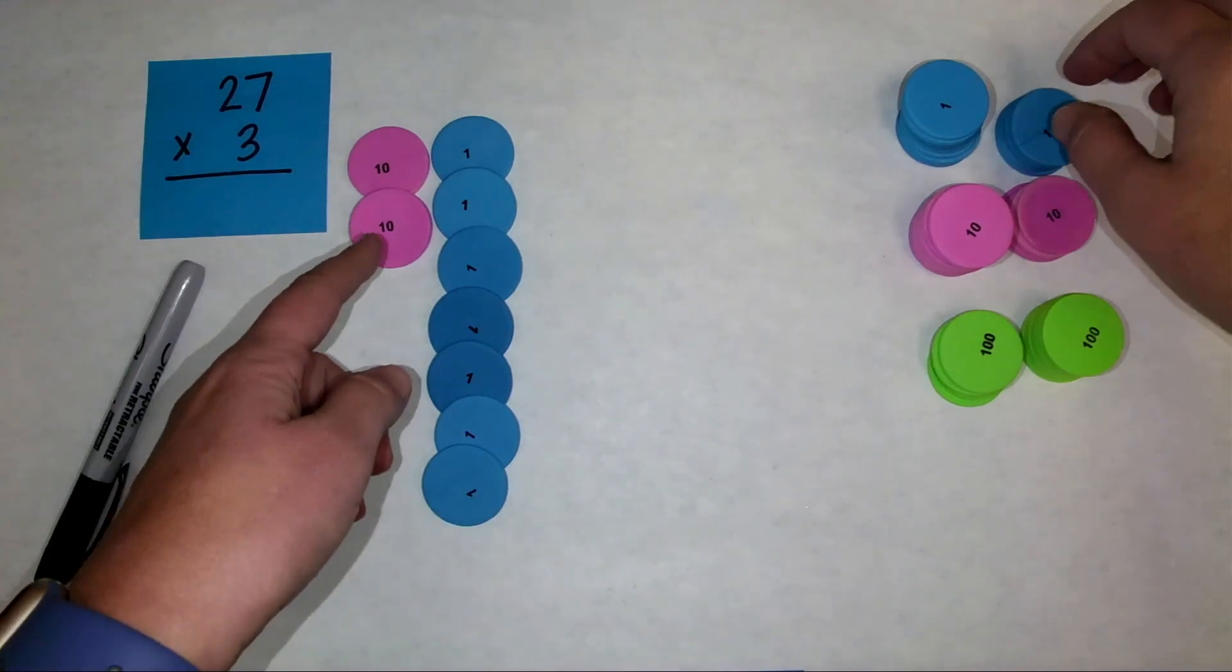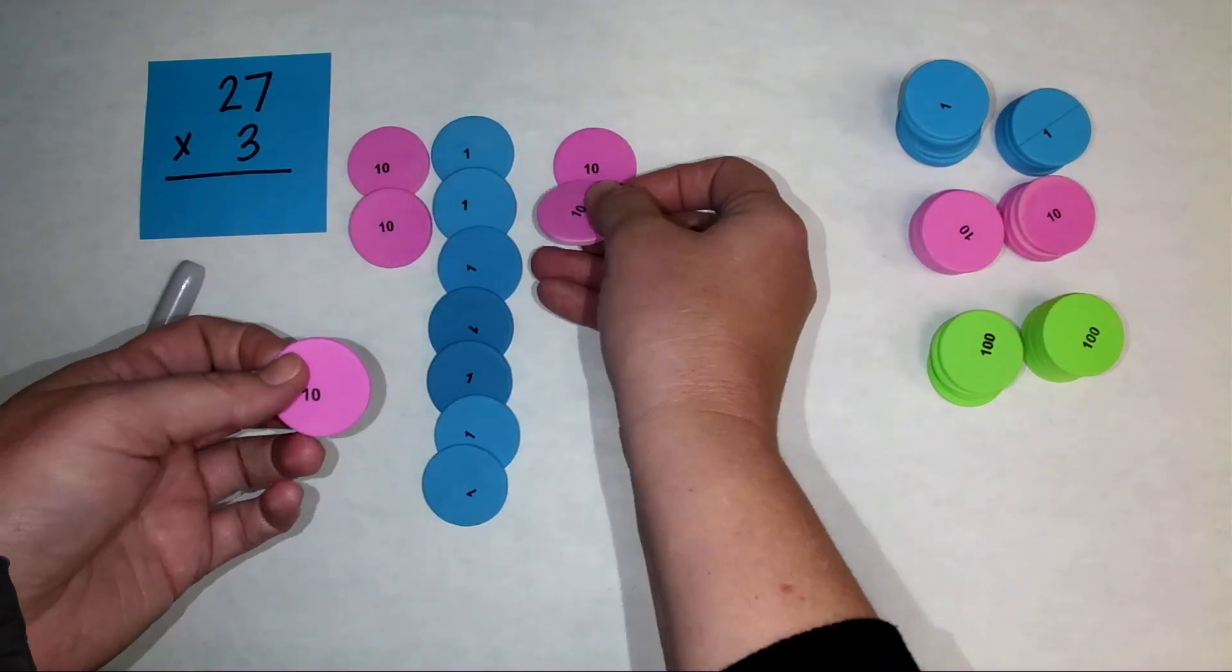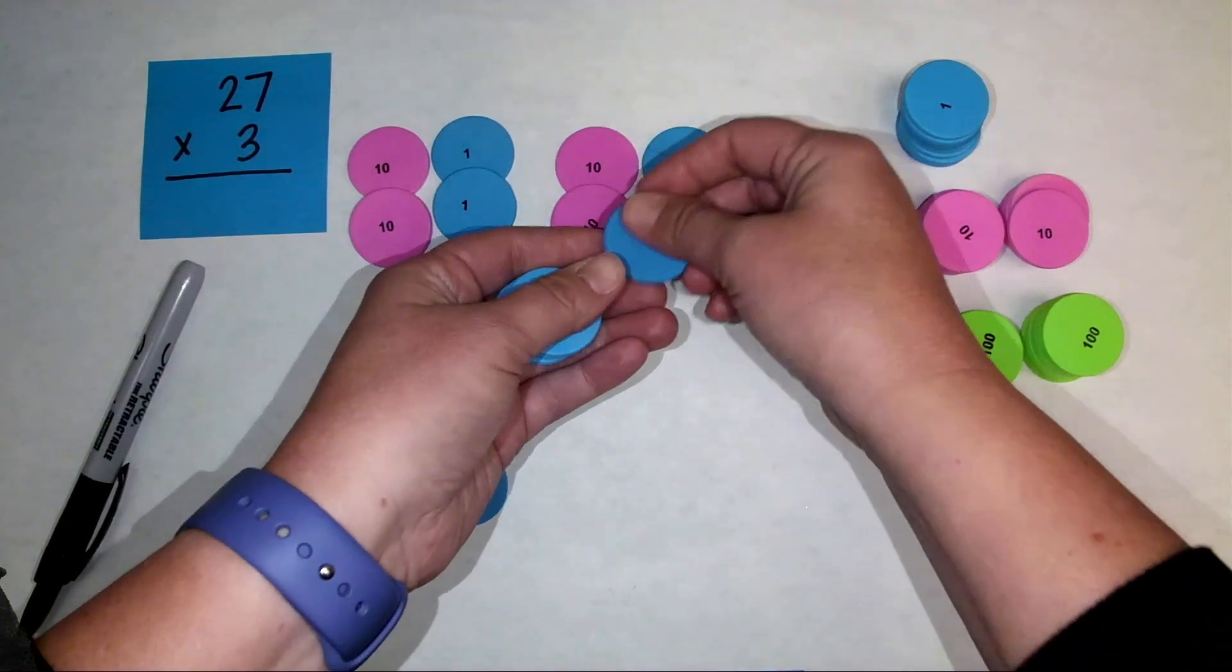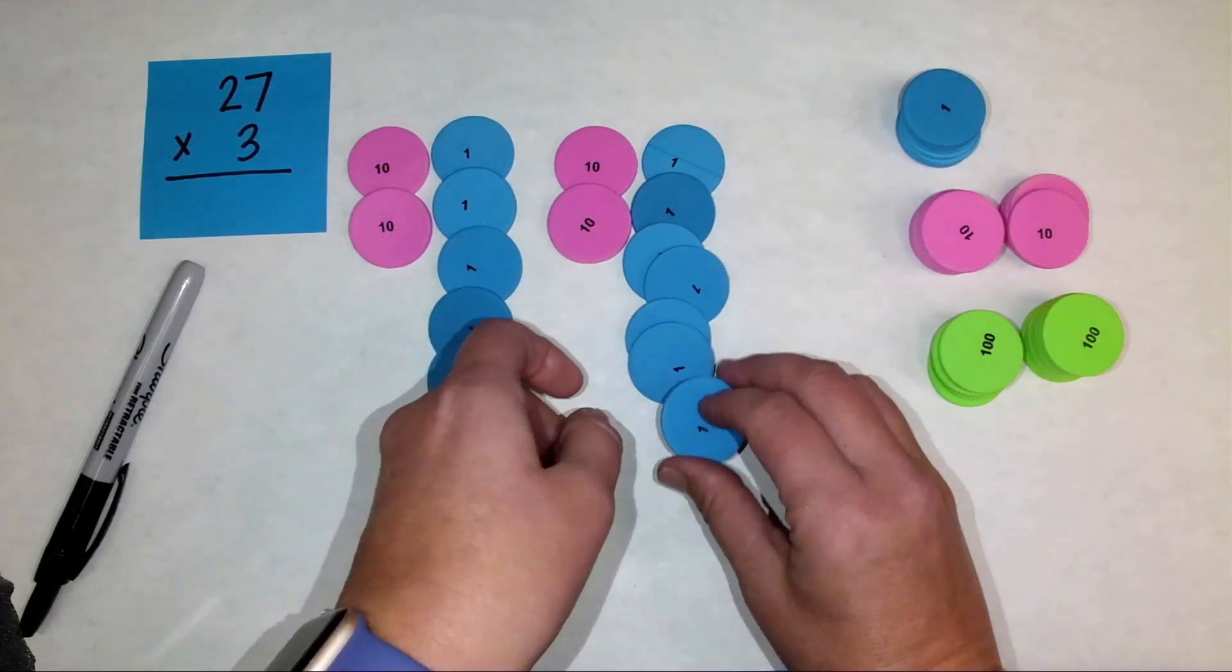And then I will show another group of 27. So here we've got two tens, and then I'll do seven ones: one, two, three, four, five, six, seven.